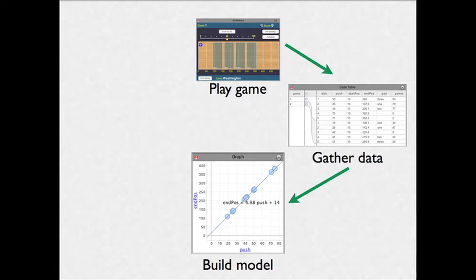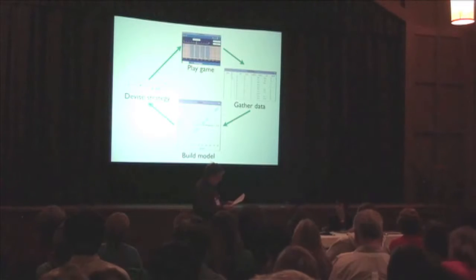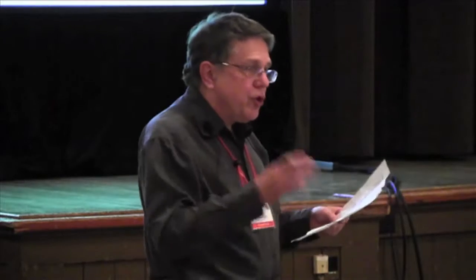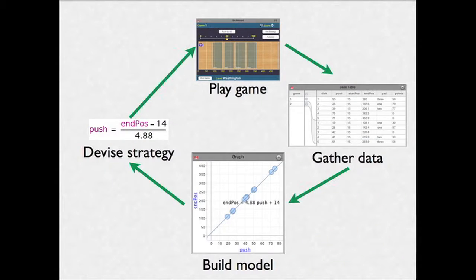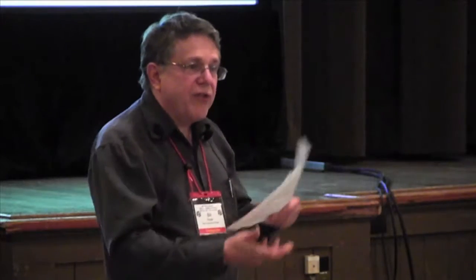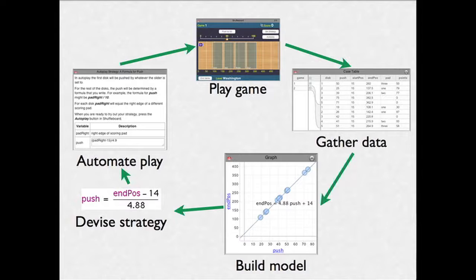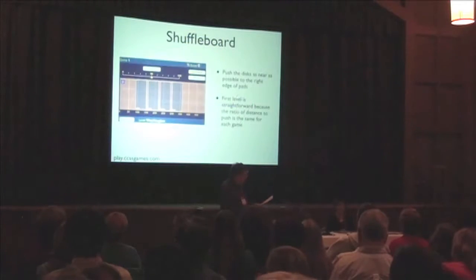Word gets around the class that graphs are essential to figuring things out here, and so they start using them. They still have to figure out how to use that model — the equation — to improve their score on the game. To do that, they might solve the equation and use the result as a formula. Some games, but not all, allow you to turn your strategy into an automation that plays the game quickly and accurately. At this stage, it is the model and strategy that are of more interest than the game moves.